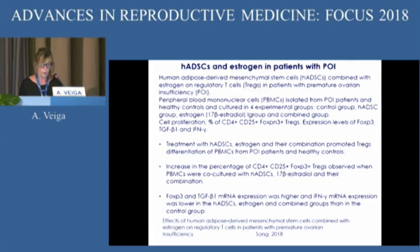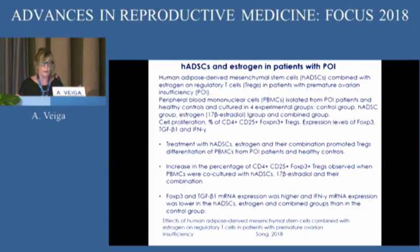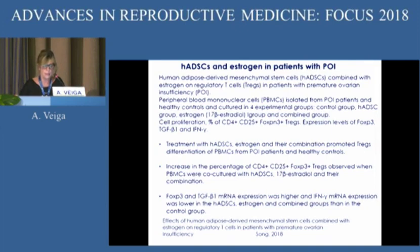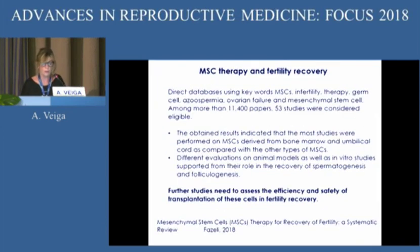Another paper from this year used peripheral blood mononuclear cells isolated from premature ovarian insufficiency patients and healthy controls to compare them and see if cells put in contact with patient cells contribute to changes in their problems. The results seem quite good, but we need to take them with caution because they are quite preliminary.